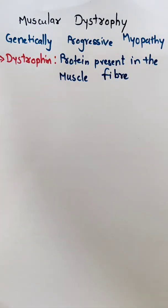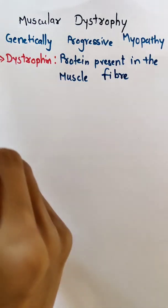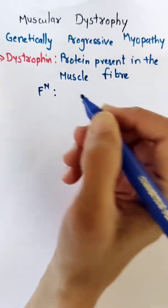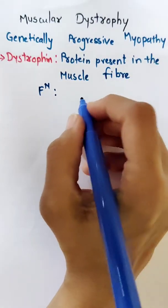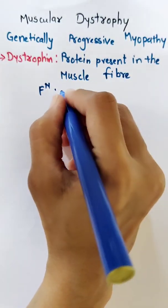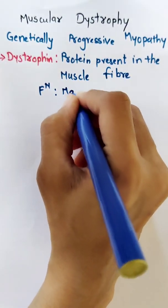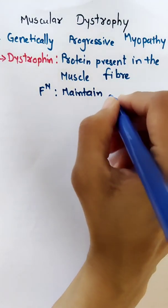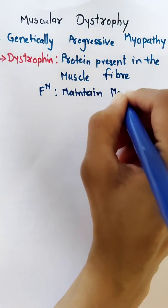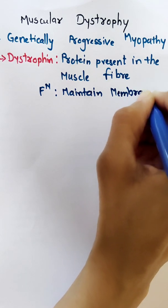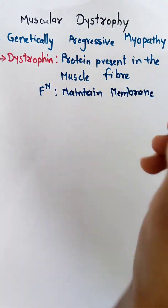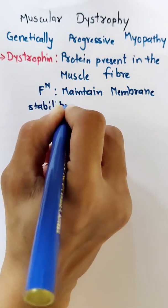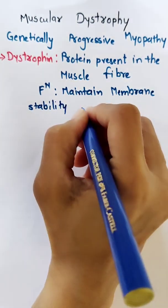The function of this dystrophin protein is to maintain the membrane stability during muscle contraction.